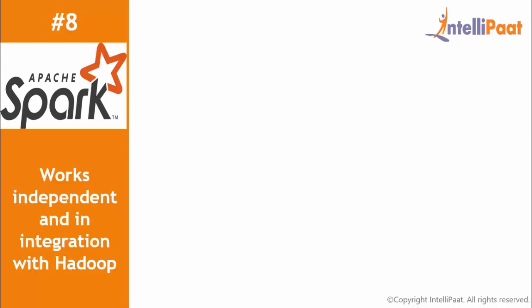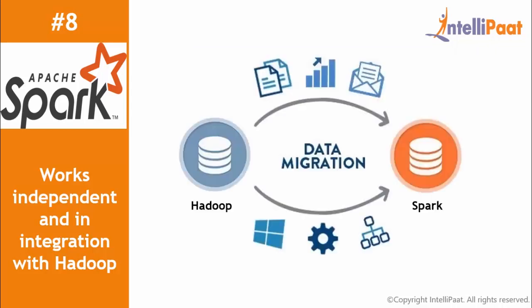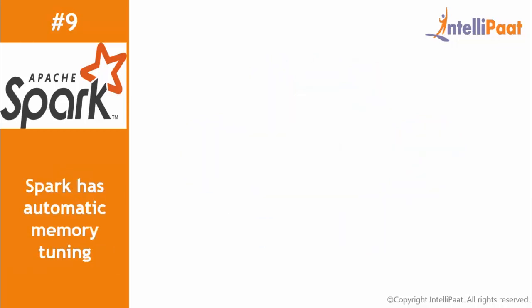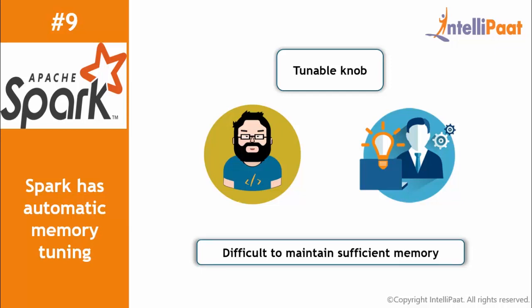Spark is capable of working in an independent manner as well as in integration with Hadoop, which is the main reason it is suitable for organizations that want to migrate data from Hadoop to Spark. Another interesting fact about Apache Spark is that it provides tunable knobs, which help programmers and administrators take charge of an application's performance.